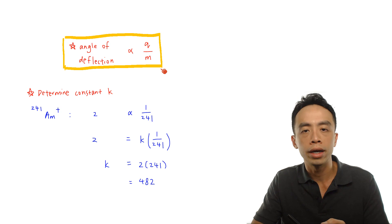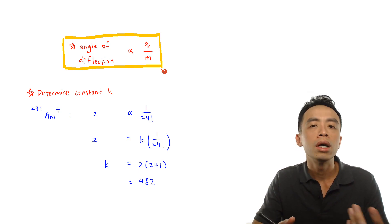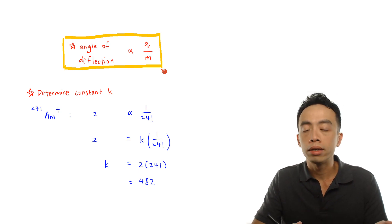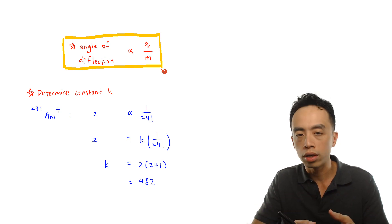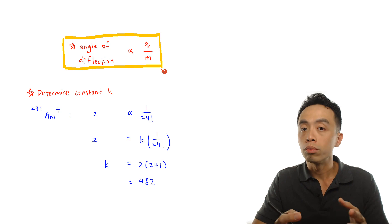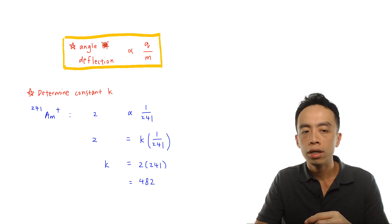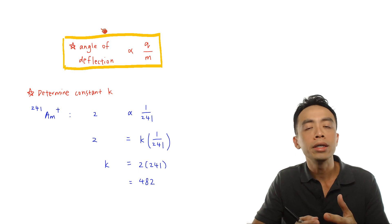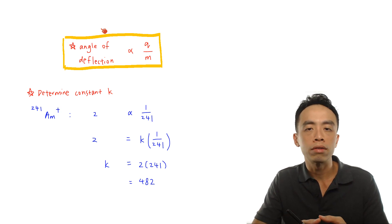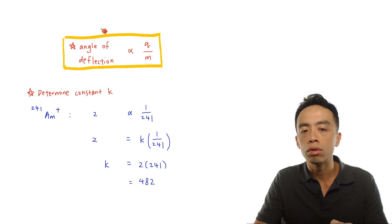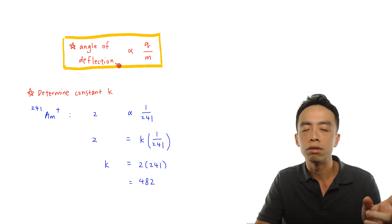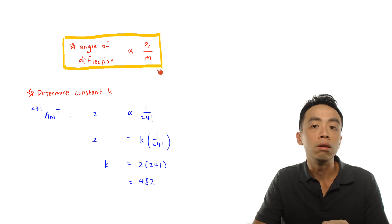Since we are talking about ions, the mass will be the nucleon number or mass number. If the particle has a bigger charge, the attraction between the charged particle and the electric field will be stronger, so the particle will be deflected to a bigger extent — the bigger the charge, the bigger the angle of deflection. On the other hand, if the mass of the particle is bigger, it will be heavier, requiring more force to deflect it, so the angle of deflection will decrease. The bigger the mass, the smaller the angle of deflection — an inverse relationship.